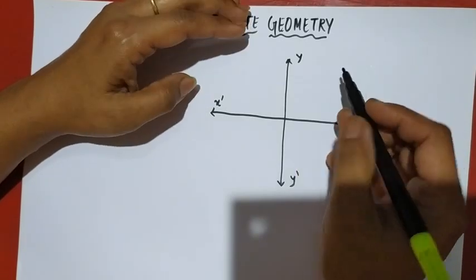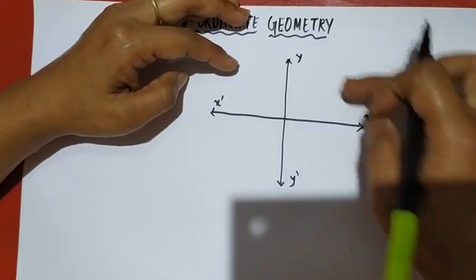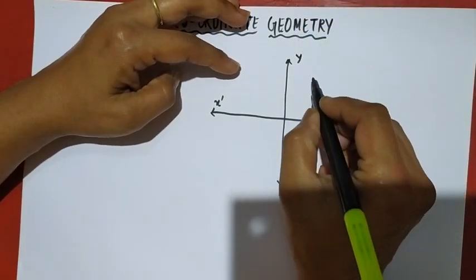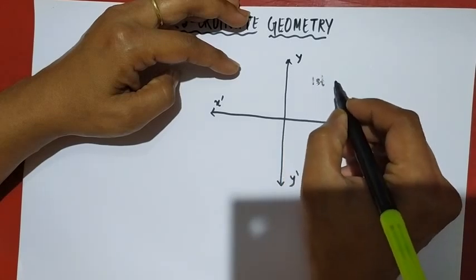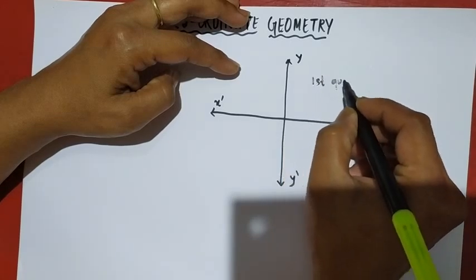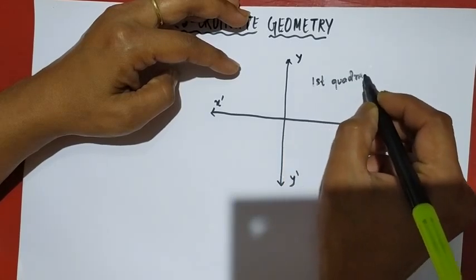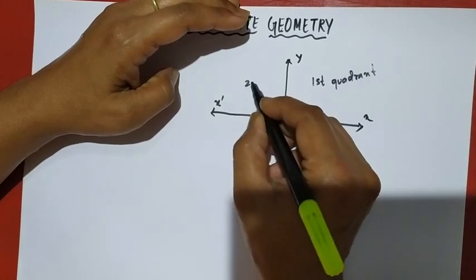Y axis. Now, X and Y form the first quadrant and the second quadrant.